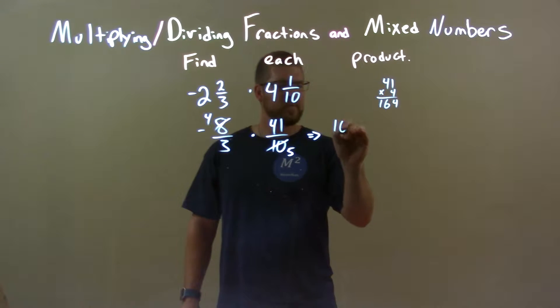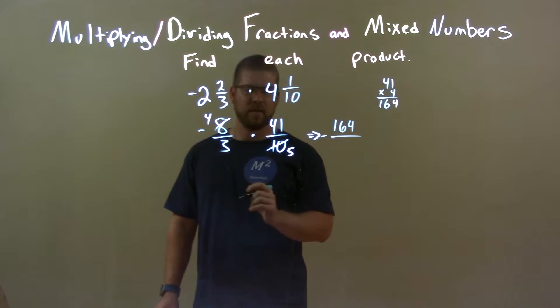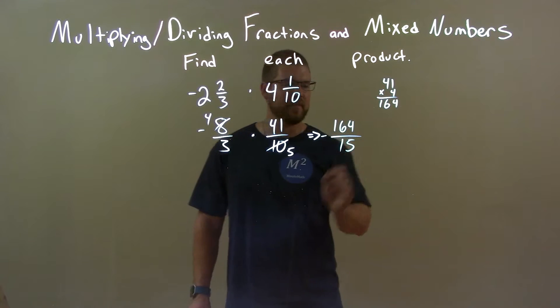164 over, and that's a negative. 3 times 5 is 15.